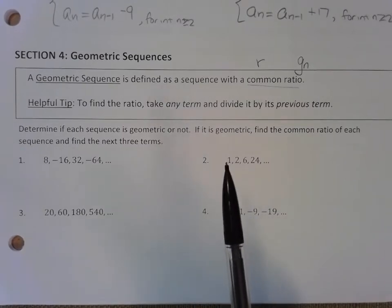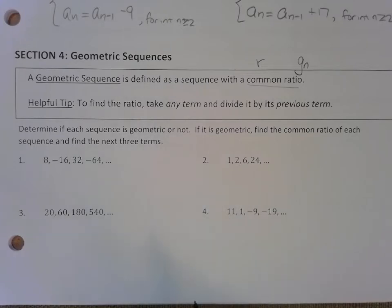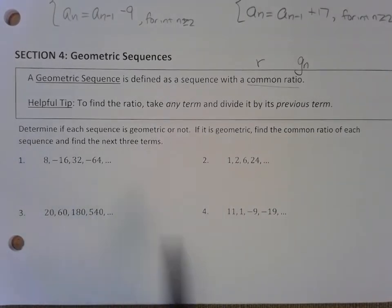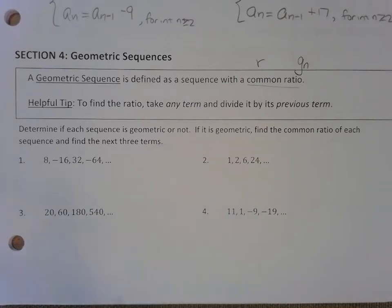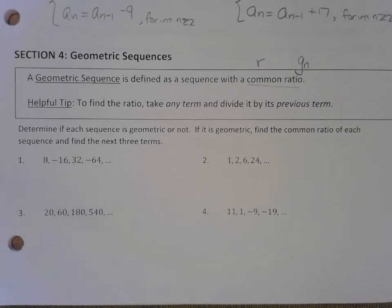The only term we can't do that with, of course, is the first term because it doesn't have a previous term to look back on. So what we're going to do is sections four and five today. Starting with section four, we're going to determine if each sequence is geometric or not. So there's a possibility that it's not. If it is geometric, we're going to find the ratio using the method we talked about earlier, taking any term and dividing it by the previous. And then finally we're going to find the next three terms in the sequence.